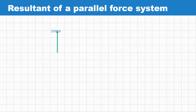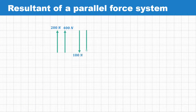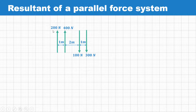The arrangement of the parallel force system is as shown over here. The forces of 200 Newton and 400 Newton are acting in the upward direction, whereas the forces of 100 Newton and 300 Newton are acting in the downward direction.